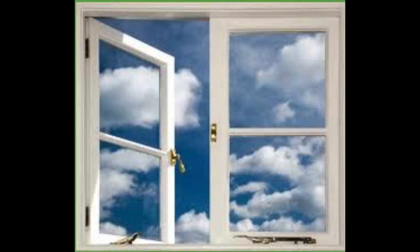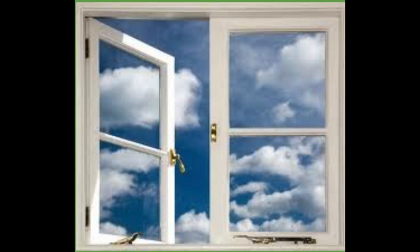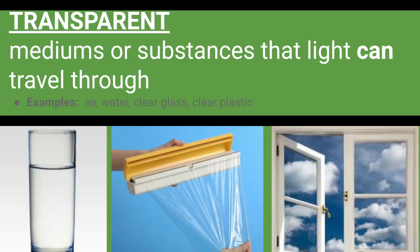If I were to shine my flashlight on the window, the light would pass through it. That's because the window is made of glass, which is a transparent material. A transparent material is a material that light can pass through. Clear plastic and water are also transparent materials.